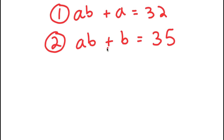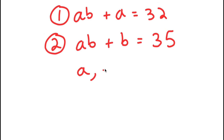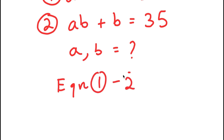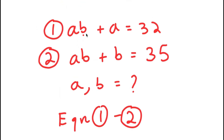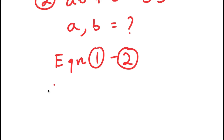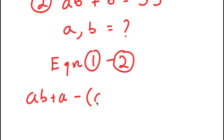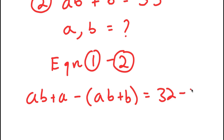So to solve the system of equations, I have to find the value of A and B. To start out, what I'm going to do is subtract equation two from equation one. So equation one minus equation two: equation one is AB plus A equals 32, so I have AB plus A minus (AB plus B) is equal to 32 minus 35.